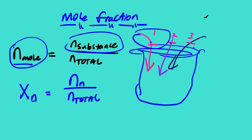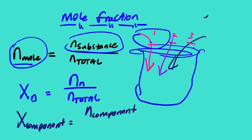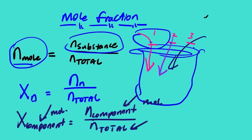Another way to write this is: x_component = n_component / n_total, where 'component' refers to the particular gas you're looking for. All quantities here are measured in moles, so mole fraction is dimensionless. In the next lesson video, we'll look at different examples of how to apply these equations.